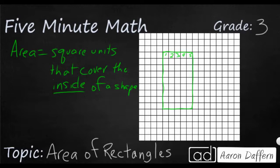I notice that there are going to be 5 in a row, because I've got 5 across this way. Let's see how many we have going down: 1, 2, 3, 4, 5, 6, 7, 8, 9. So we've got 9 sets down. What we could do is skip count by 5s: 5, 10, 15, 20, 25, 30, 35, 40, 45.